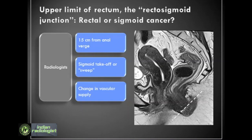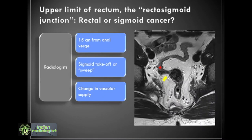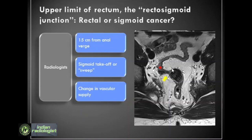Two recent concepts of the rectosigmoid junction are the sigmoid takeoff or sweep and the change in vascularity between the sigmoid and the rectum. These might help in locating the rectosigmoid junction in MRI. The mesorectum, which is the fat surrounding the rectum, is fixed to the presacral fascia, while the sigmoid colon is mobile owing to its sigmoid mesocolon. There is a point at which this fixed rectum gives way to a horizontally lying sigmoid colon which sweeps away from the sacrum. This may be seen in this axial T2-weighted MR as the point between the fixed rectum and a mobile horizontally lying sigmoid, and this point may be taken as the rectosigmoid junction.